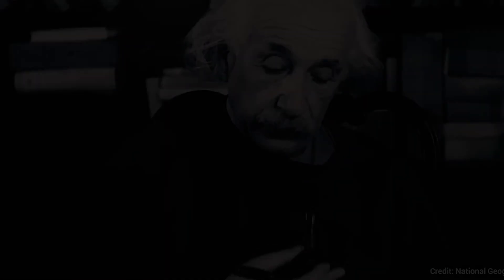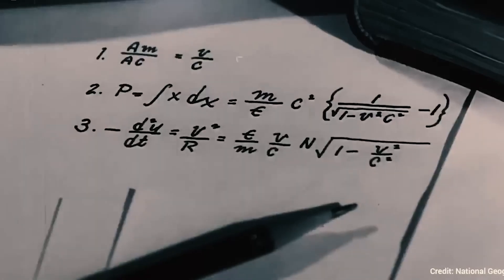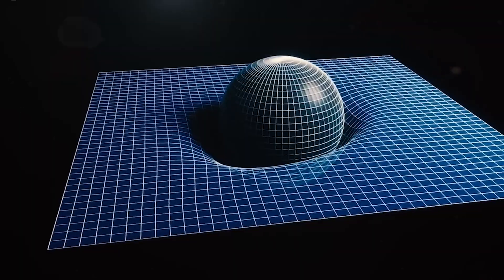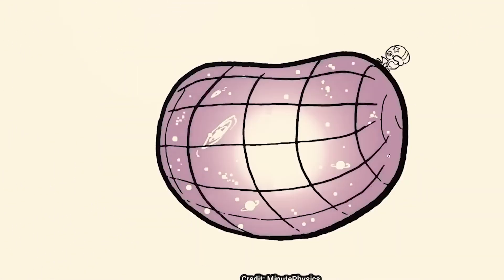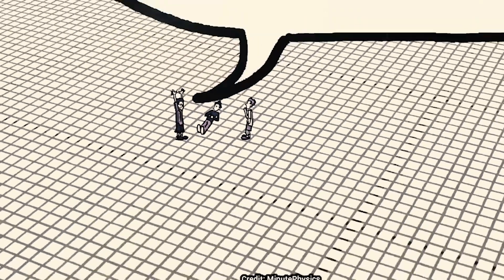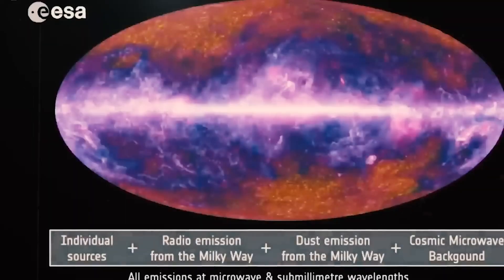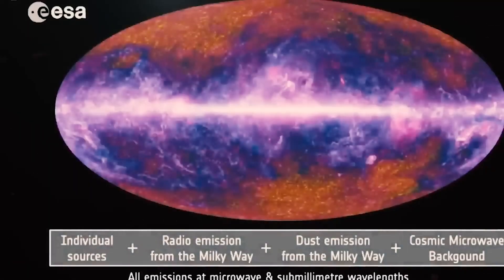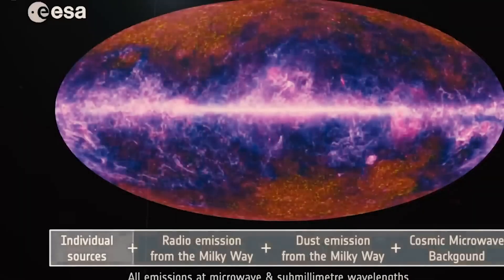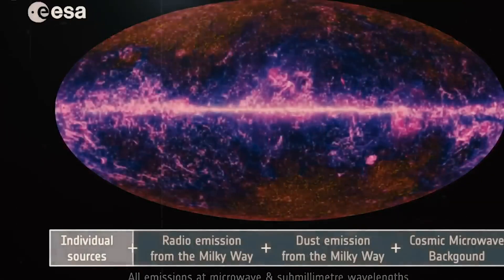For example, Einstein's theory of relativity tells us that mass should curve space and time. A universe filled with matter ought to be curved, either closed in on itself like a sphere, or stretched out like a saddle. Yet our universe appears almost perfectly flat. Stranger still, regions of space located in opposite directions from Earth have nearly identical temperatures. In a steadily expanding universe, there wouldn't have been enough time for heat to spread between them. On the surface, that seems to defy the basic rules of thermodynamics.